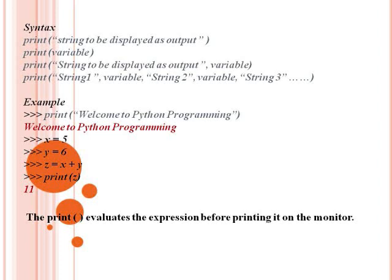So the output is 11. The print function first evaluates the expression before printing it on the monitor. We need the print statement; before that, we need the variable and the expressions to get the result.